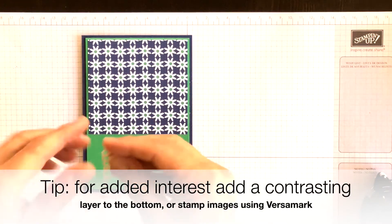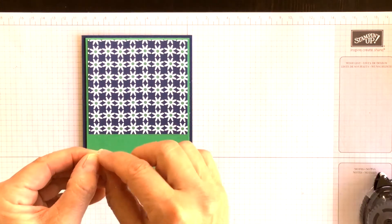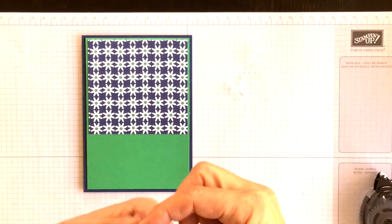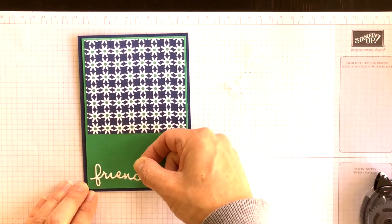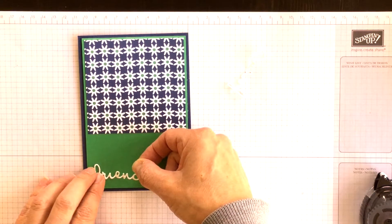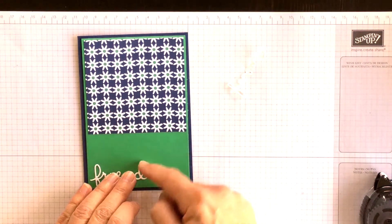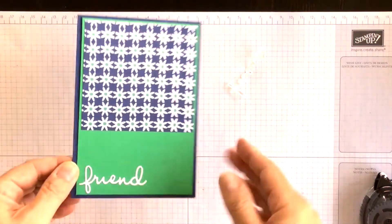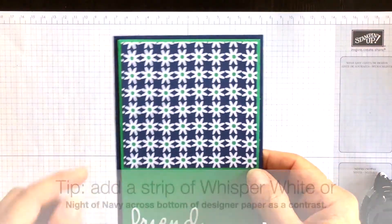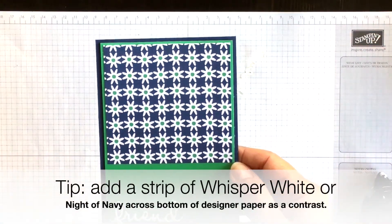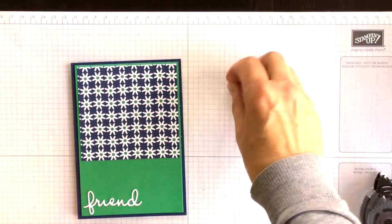Now I'm going to bring in my friend word, peel off the backing and I'm going to attach it. There we go. I'm going to attach it to the bottom left hand corner of my card and you'll see why next.